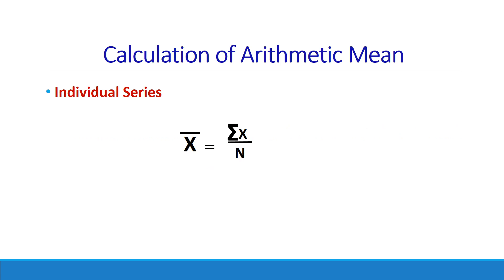Let us take an example. Certain values are given as 10, 20, 30, 40, 50, 16, and 40. We have to find the arithmetic mean of these values.